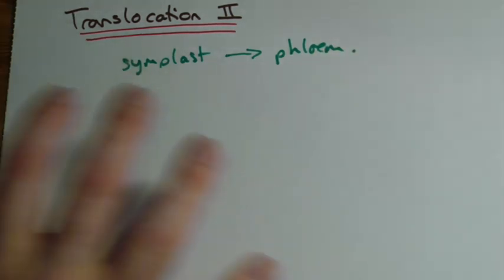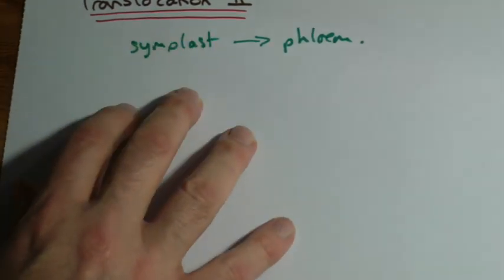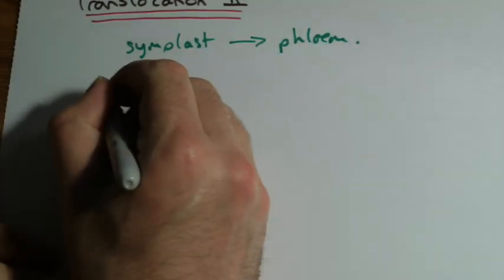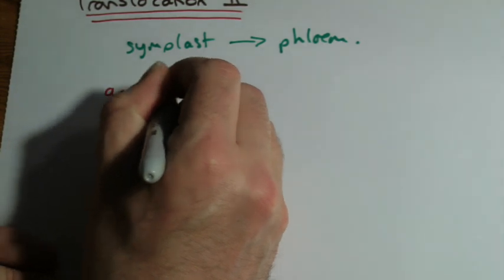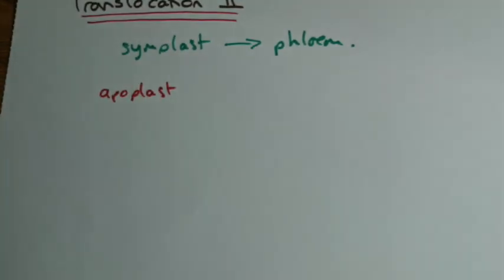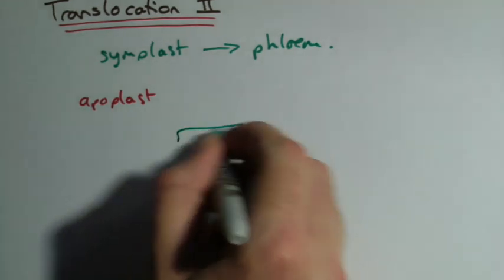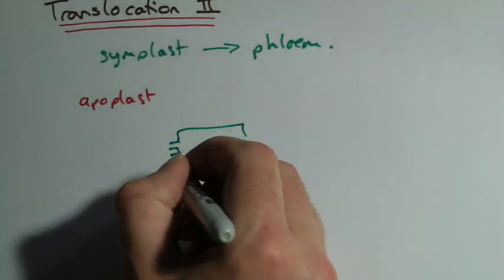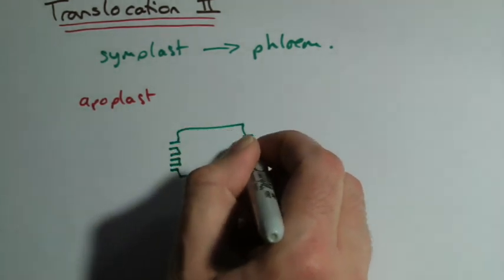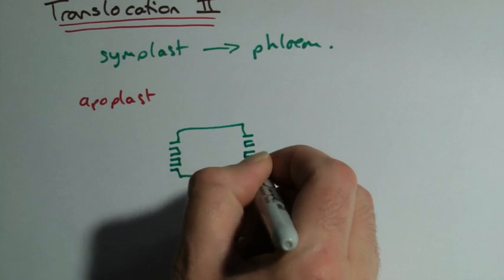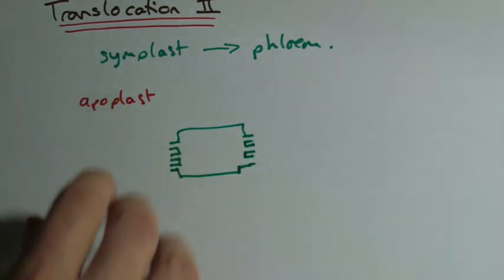However, we also have this secondary route which is the apoplast route, or the second route, and this is the one that goes through via the cell walls. If you think of a cell for a second, think of a cell, here's our plasmodesma, but around the outside of that, of course, we've got a cell wall.